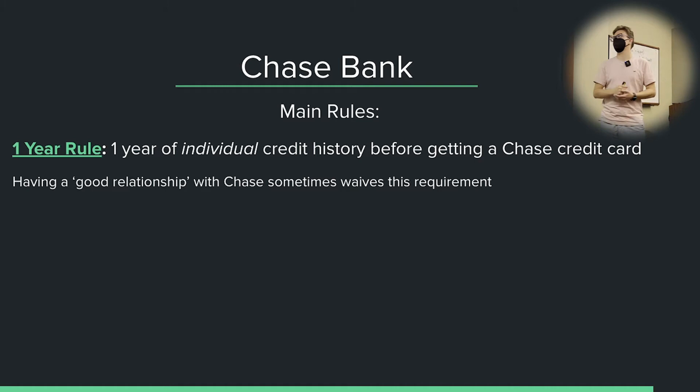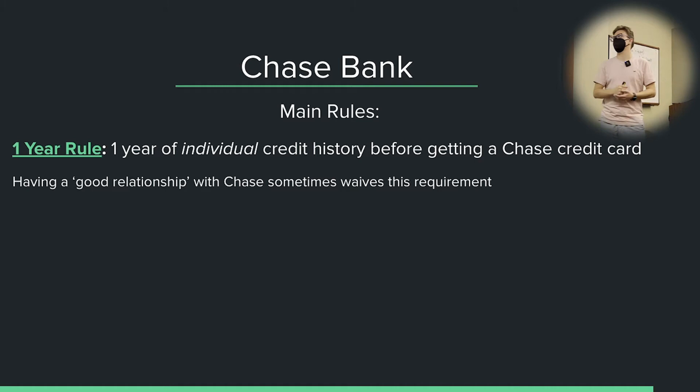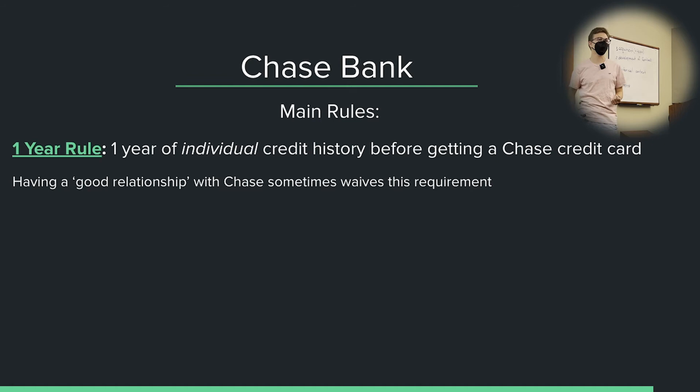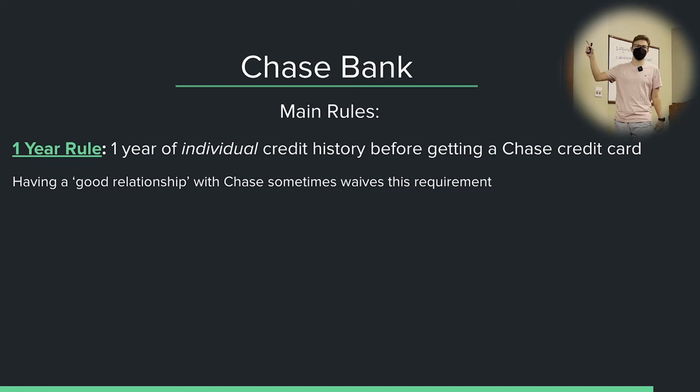If you have a good relationship with Chase, you can sometimes waive this requirement. By good relationship, we just mean having a lot of money with the bank. If you have a Chase account with a lot of money in it, you can probably bypass this one-year rule. Data points online show that people are getting approved for Chase cards with very little history because they have $10,000 or $20,000 with the bank. So if you want to get a Chase card, put some money in their account and they'll maybe help you out.